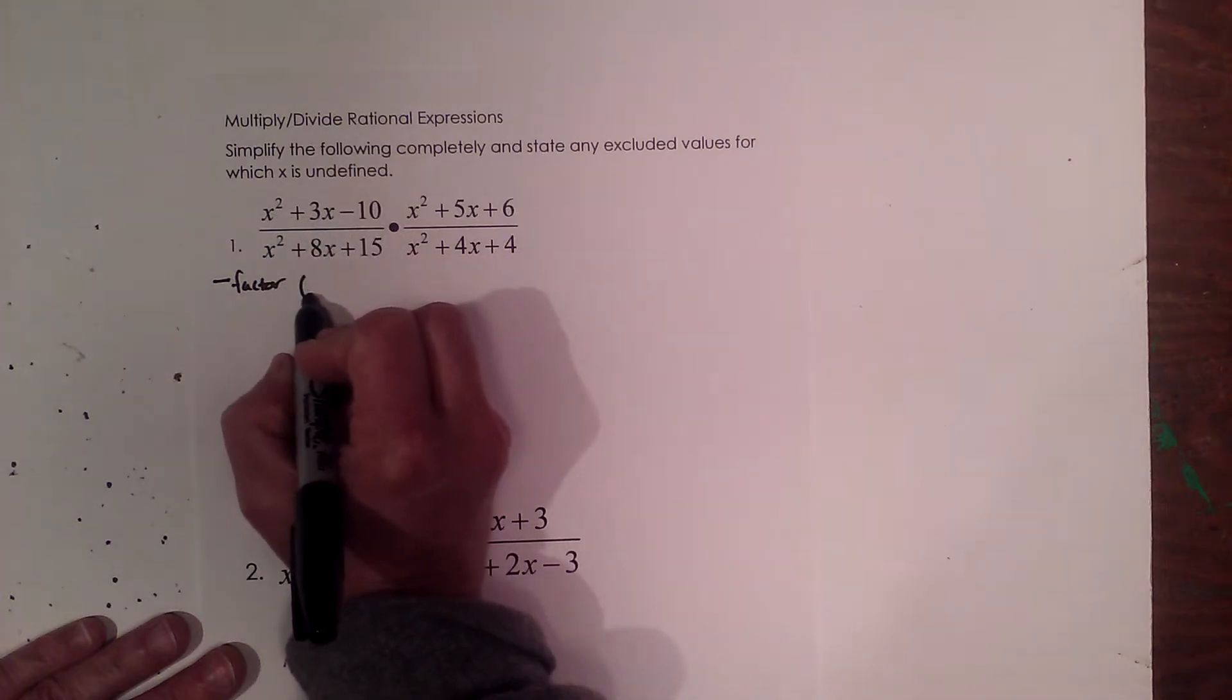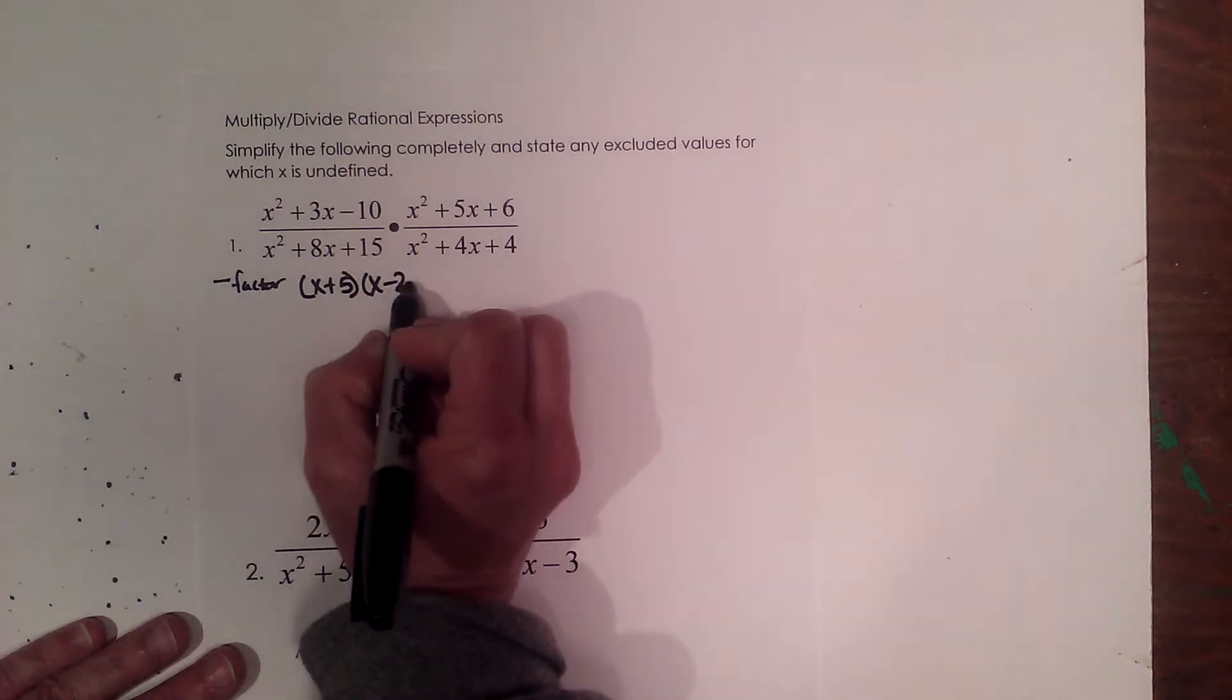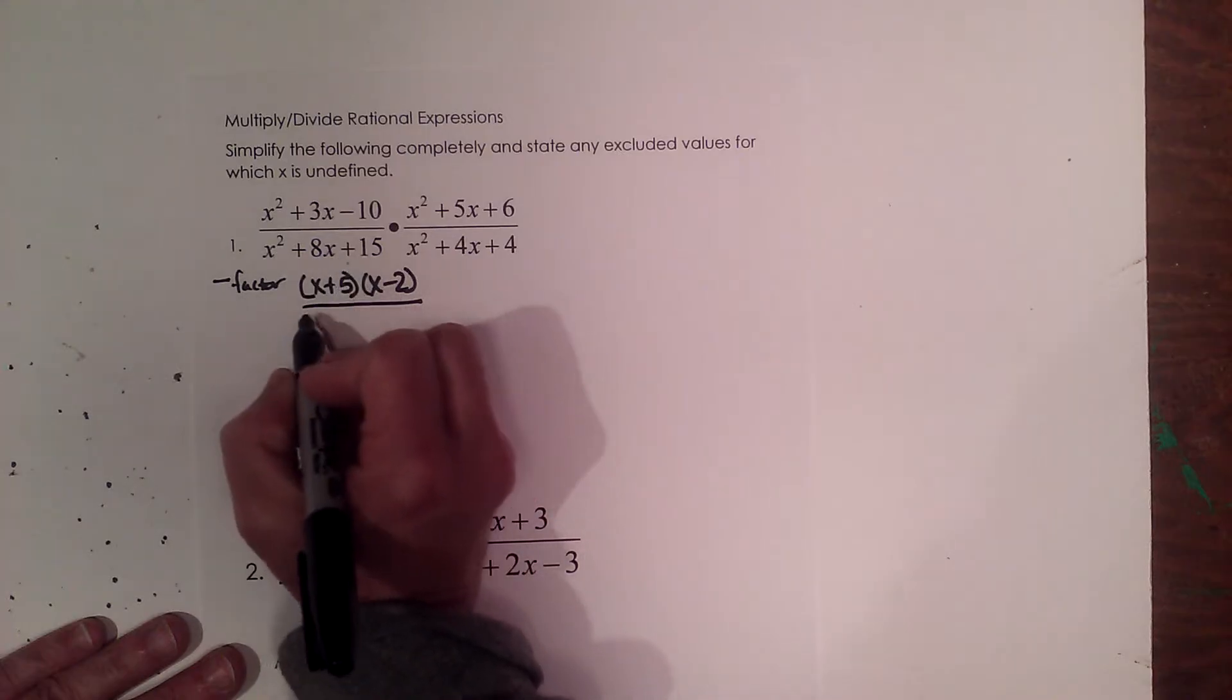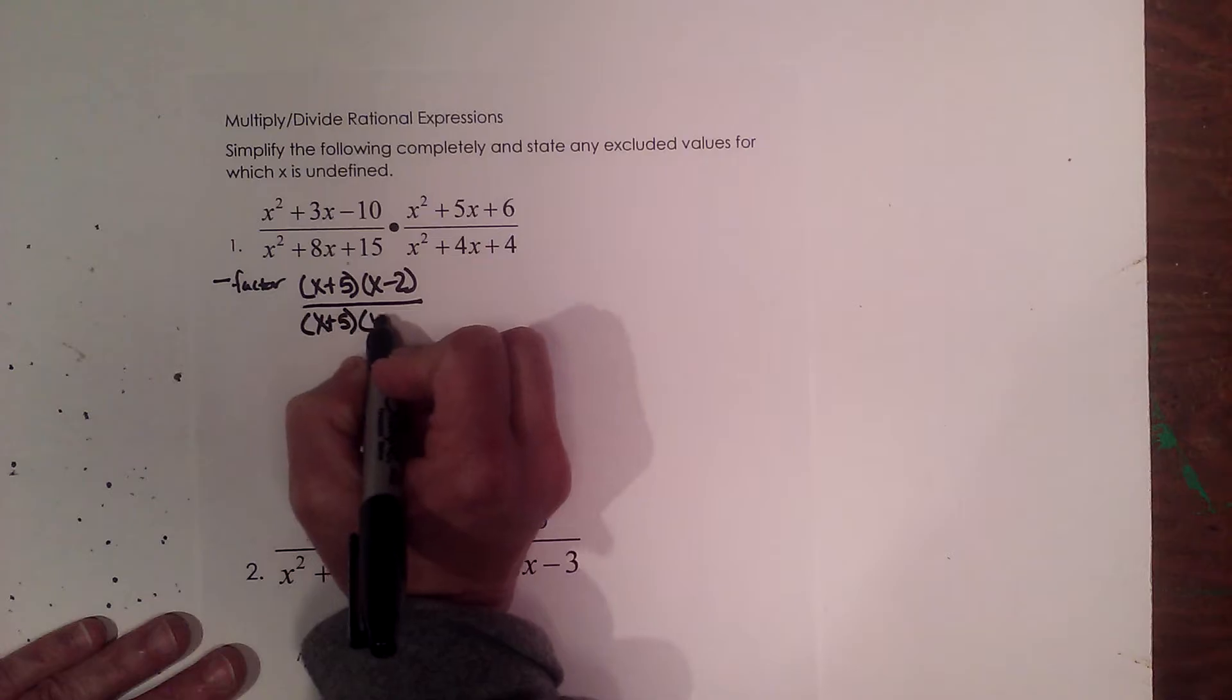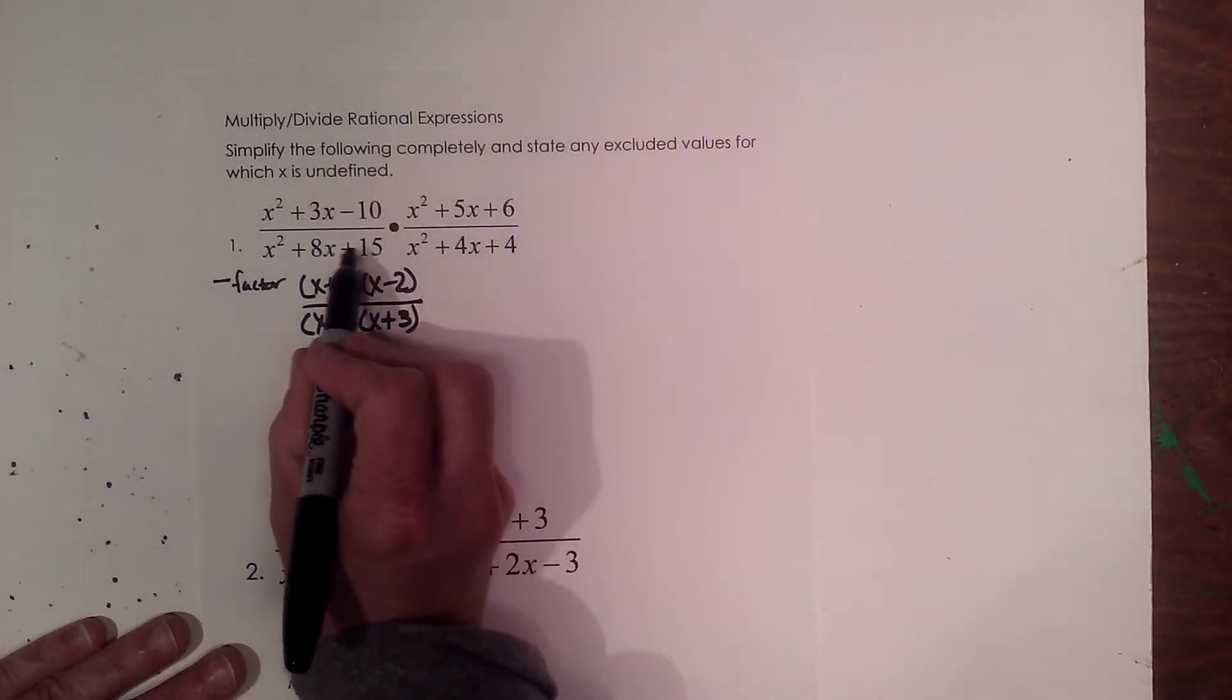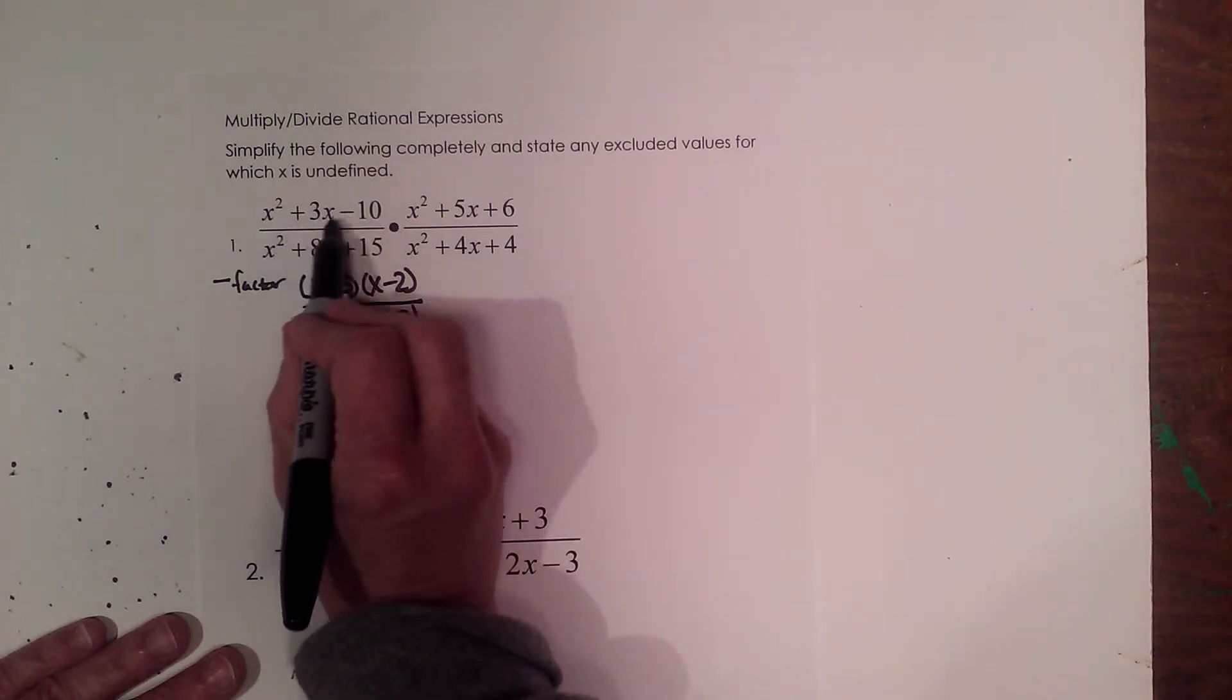So the top, which is called the numerator, I'm going to factor into x plus 5 times x minus 2. The denominator, or the bottom, I'm going to factor into x plus 5 times x plus 3. Because you always ask yourself what multiplies to 15 and adds to 8, or what multiplies to negative 10 and adds to positive 3.